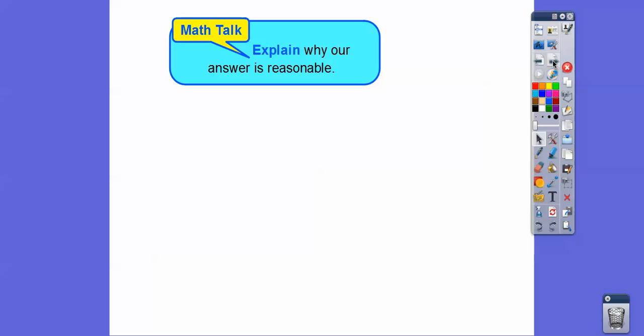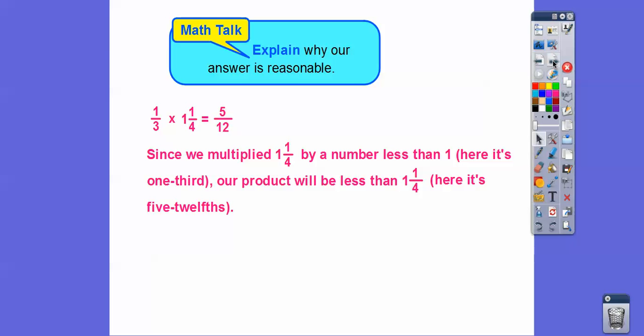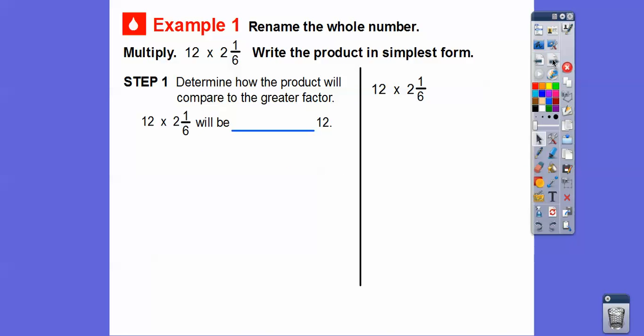Explain why the answer is reasonable. Since we multiplied one and one-fourth by one-third, which is less than one, our product — five-twelfths — is less than what we started with. Any time you multiply a number by something less than one, the answer will be less than what you started with. Now let's write the product in simplest form for the next example.